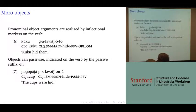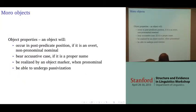Also, objects can passivize, and you see that verbs passivize with the passive morphology -un in example seven. In general, if you want to say what constitutes an object in Moro, it has the following properties.